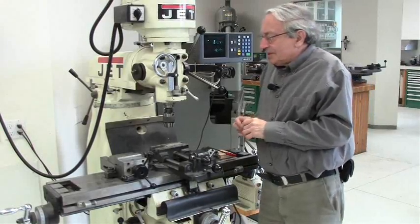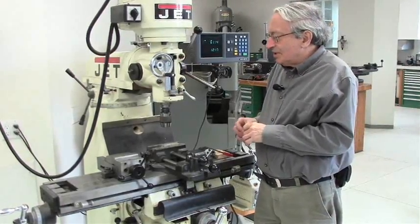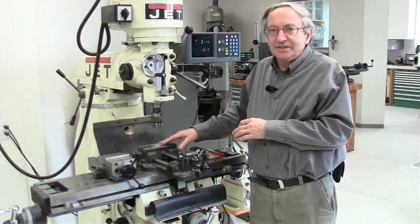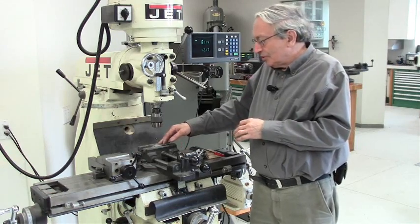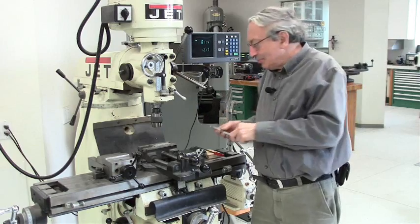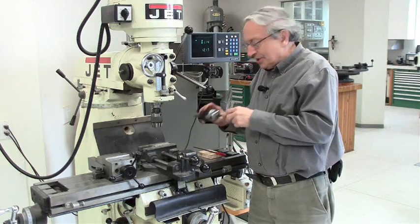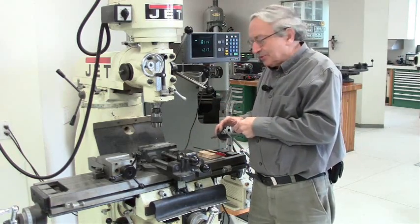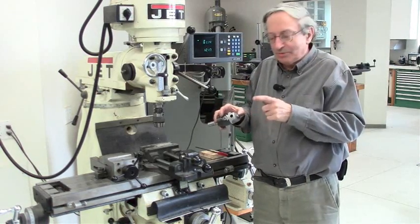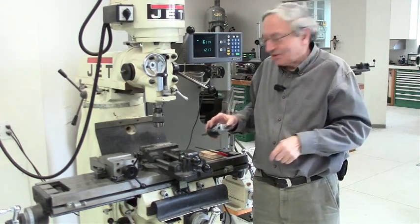There are basically three ways to make a hole with a drill press or a milling machine. One is drilling that I showed you before, one is reaming, which is more accurate than drilling—it's the next step—and another one is boring, which is comparable accuracy to reaming, but it's variable size and it's especially suitable for large holes where it's hard to get such a large reamer.